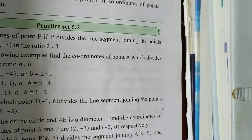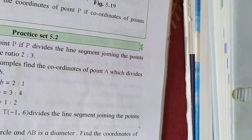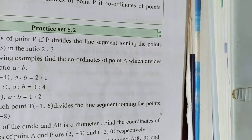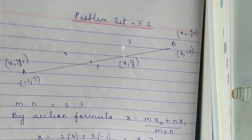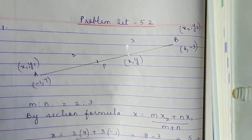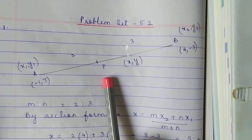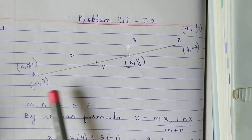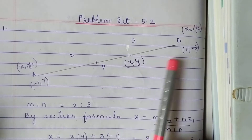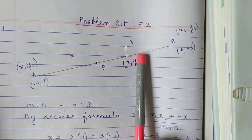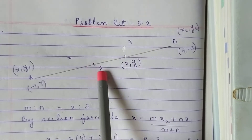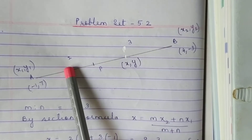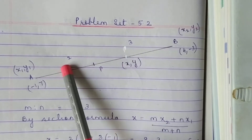We begin with the first question in exercise 5.2. Look into your textbook as I read out the question. Find the coordinates of the point P if P divides the line segment joining the points A(-1, 7) and B(4, -3) in the ratio 2 is to 3. So you have a line AB; these are the coordinates of A and B. You have to find point P which divides AB in the ratio 2 is to 3. So M is 2, N is 3. X1, Y1 is (-1, 7) and X2, Y2 is (4, -3).